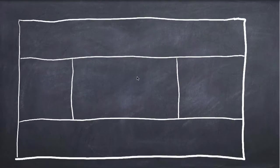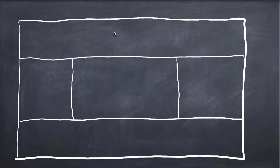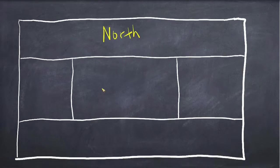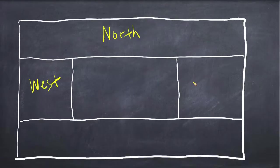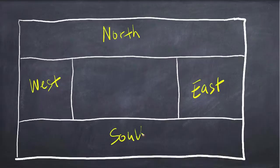Visually, the border layout will divide the container into five different regions as you see on the screen. At the top you have the north region, on the left you have the west region, on the right is east, the bottom is south, and finally the center region.